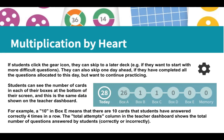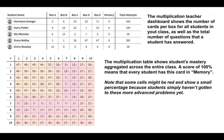The Total Attempts column in the teacher dashboard shows the total number of questions answered by students, correctly or incorrectly. In the teacher dashboard, you can see the number of cards for all boxes for all students in your class, as well as the total number of questions that each student answered.